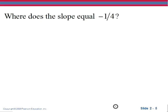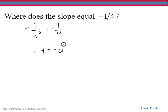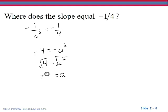Now where does the slope equal negative 1 fourth? Well, if the slope is negative 1 over a squared and we want to know where that equals negative 1 fourth, then we have a proportion. We can cross multiply: negative 1 times 4 is negative 4, and a squared times negative 1 is negative a squared. Dividing both sides by negative 1 gives us 4 equals a squared. Taking the square root of each side — remembering to include both positive and negative — the square root of 4 is 2, so a equals positive or negative 2. So where a is 2 and where a is negative 2, our graph will have a slope equal to negative 1 fourth.